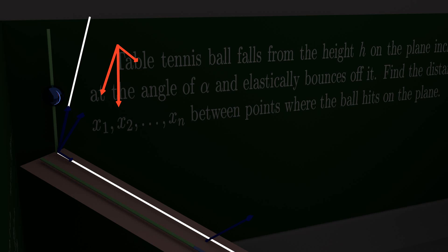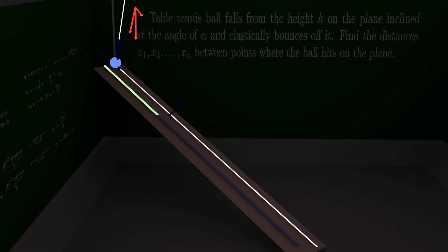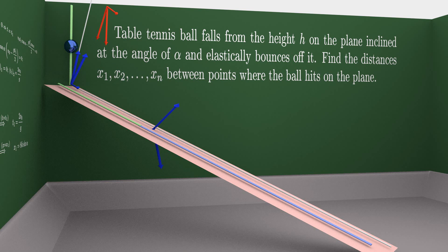So, with this kind of setup, our goal is to find the places where the ball hits the inclined plane, and of course the distances between them. Here you can see the first two distances denoted by the green and the blue lines. It is now clear why we choose such positions of the x and y axes.